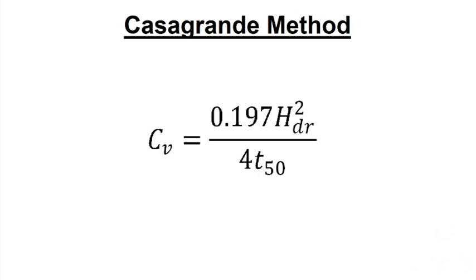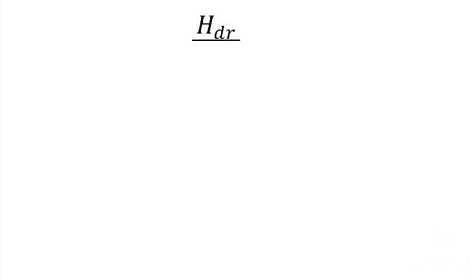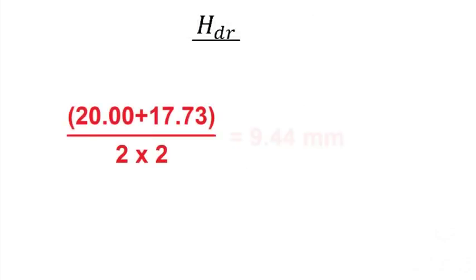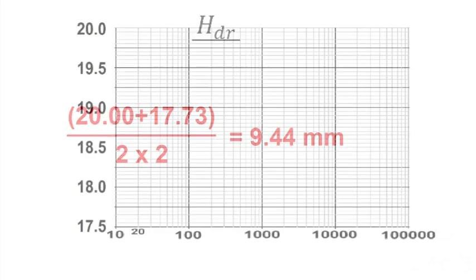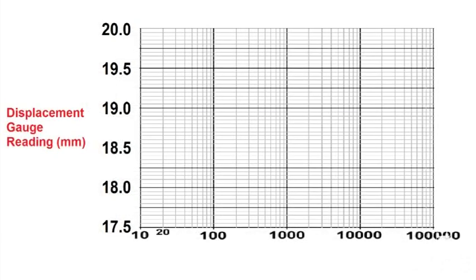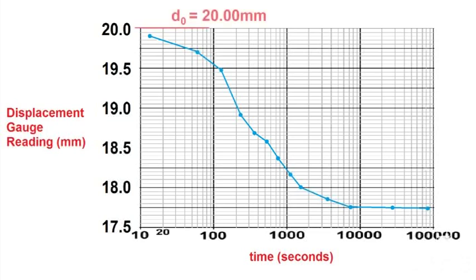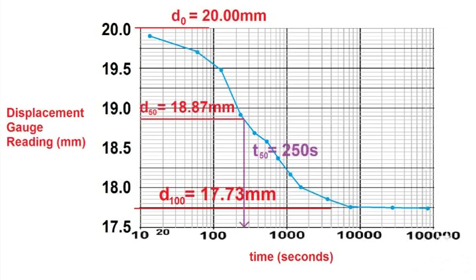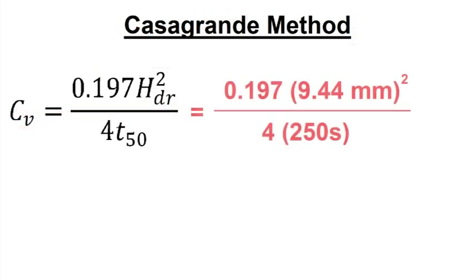For the Casagrande method, H sub dr is the average distance from the edge of the sample to the center over the consolidation period. Create a semi-log graph of the displacement gauge reading or height on the y-axis against the log of time in seconds on the x-axis. Lowercase t sub 50 is the time that corresponds to a displacement drop of 50%. Find d0, d50, and d100: d0 corresponds to the initial height of the sample at time 0, d100 corresponds to the final height at the end of the test, and d50 is the average of these two values. Interpolate to find t sub 50, then calculate the coefficient of consolidation.